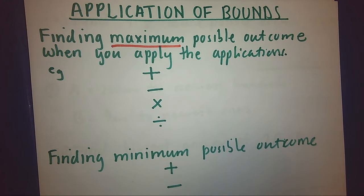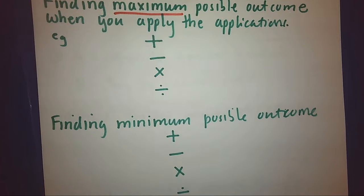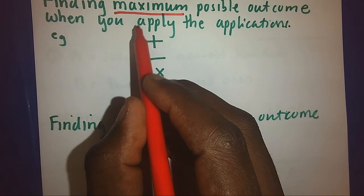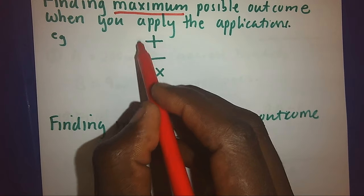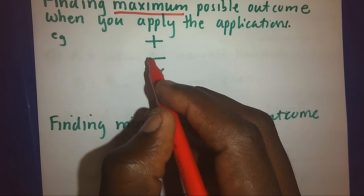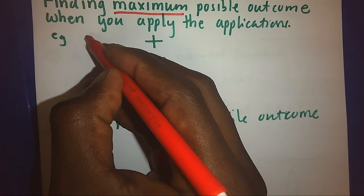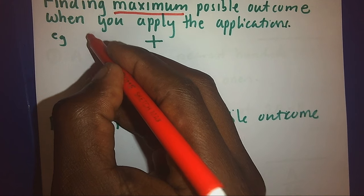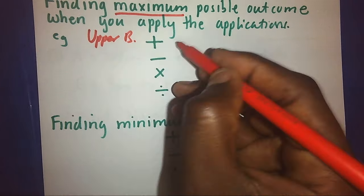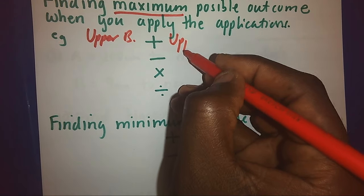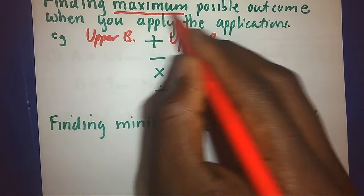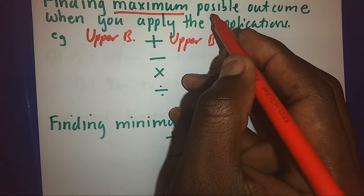The logic tells us: whenever we want to get the maximum possible outcome and our application is addition, we shall need to add all our numbers when we are taking the upper bounds. So, when we use the upper bounds, this will help us to get the biggest possible answer in addition.